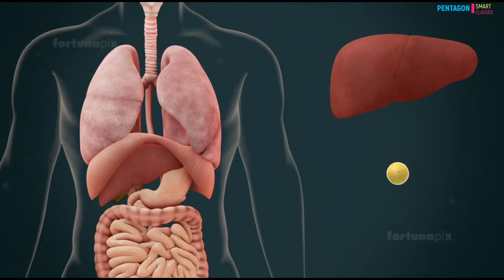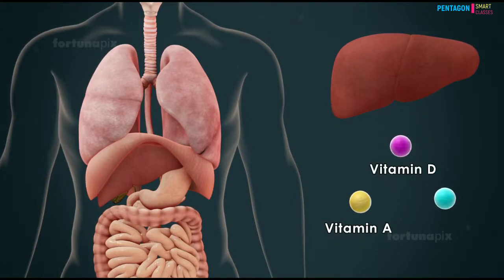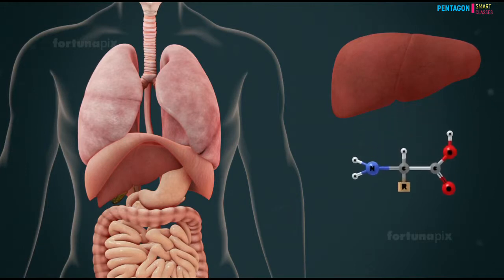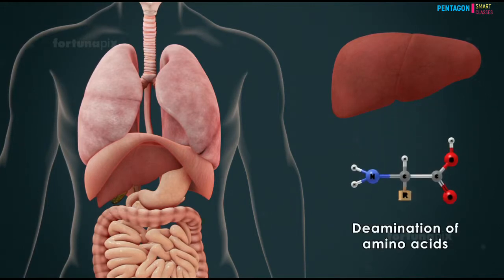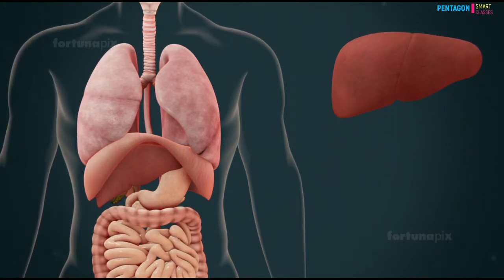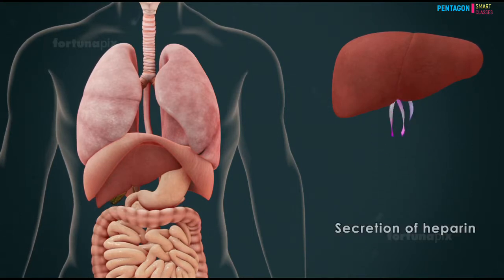The liver synthesizes vitamin A from carotene and stores vitamins A, D, and B12. Other functions of the liver include the deamination of amino acids, the synthesis of urea, and the secretion of heparin.